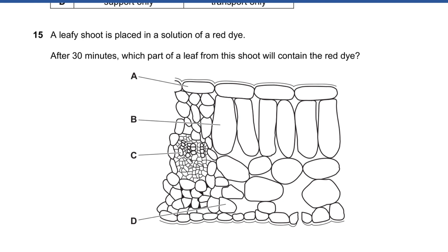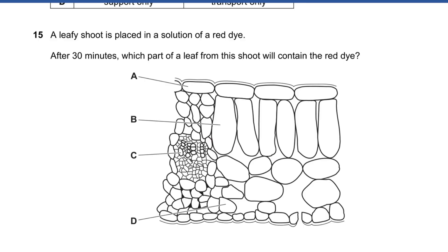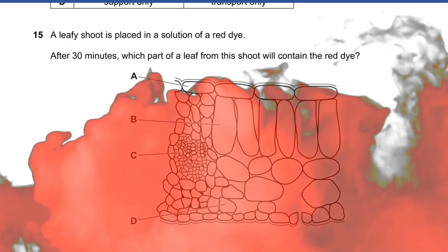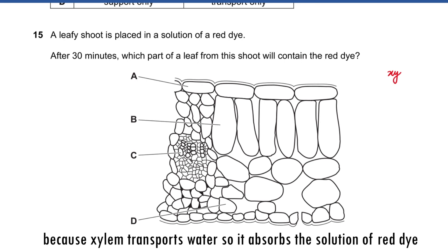Question 15: A leafy shoot is placed in a solution of red dye. After 30 minutes, which part of the leaf will contain the red dye? It's going to be the xylem.